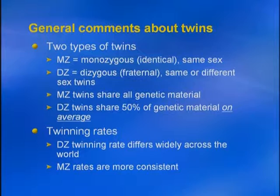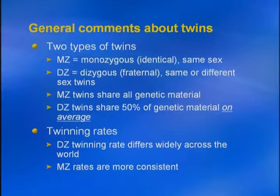Before we begin, we have to define some terms. There are two different types of twins. MZ twins, which are monozygous or monozygotic twins, which are identical twins. They share all their genetic material in common. MZ twins, because they share their genetic material in common, can only be same-sex twins, so either both female or both male. DZ twins, or dizygous or fraternal twins, share on average 50% of their genetic material and would be genetically the same as siblings, except they're born at the same time. The advantage of DZ twins over siblings is they share a common environment in utero and generally more similar environments growing up.